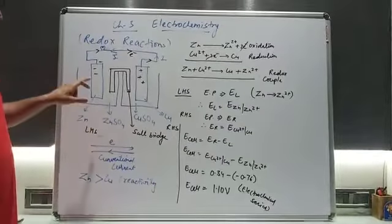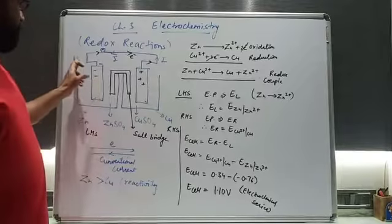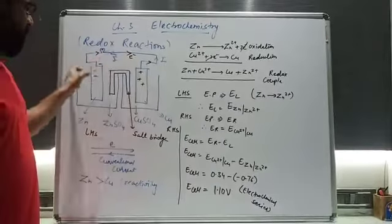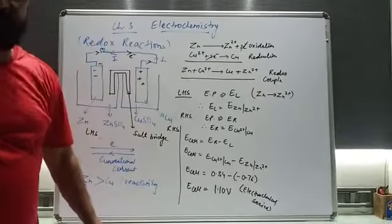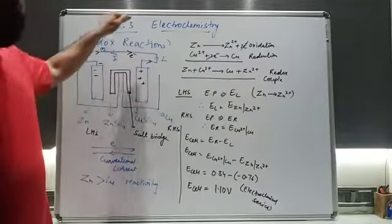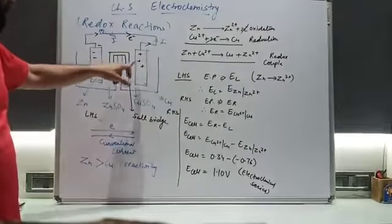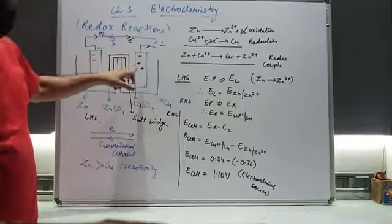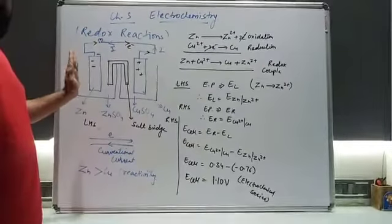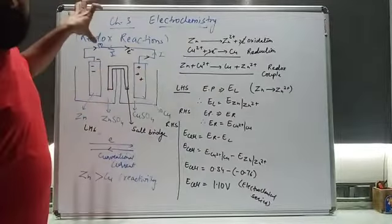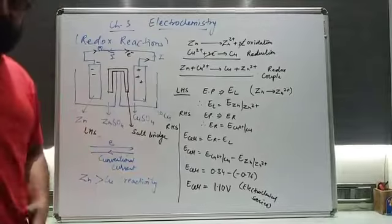Now, zinc has more free electrons, so electrons travel through the wire from zinc to copper — this is called real current or electronic current. But in physics you have studied that positive charge travels from positive terminal to negative terminal, so conventional current flows from copper to zinc. The electrons are flowing from zinc to copper, meaning zinc has the higher electron potential and copper has the lower electron potential.